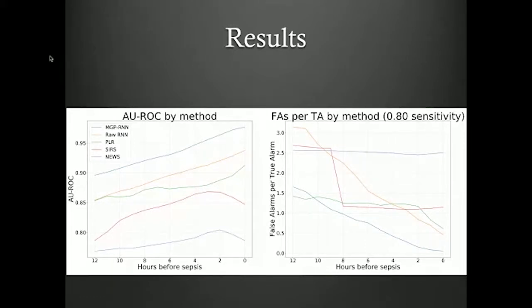Looking at the ROC curve, we can achieve around a 90% accuracy in being able to predict that a person is about to come down with sepsis. So we can hopefully treat it earlier, as I showed on the previous slides.